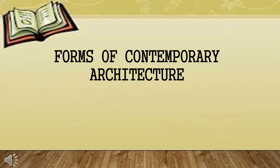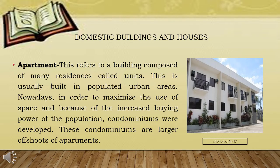Here are some forms of contemporary architecture. We have domestic buildings and houses. The apartment refers to a building composed of many residences called units. This is usually built in populated urban areas. Nowadays, in order to maximize the use of space and because of the increased buying power of the population, condominiums were developed. These condominiums are larger offshoots of apartments.